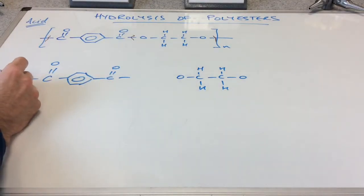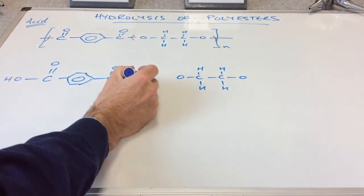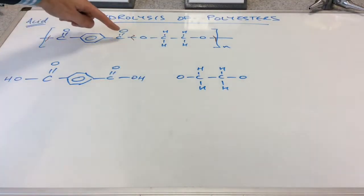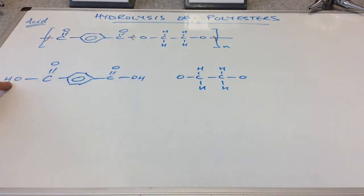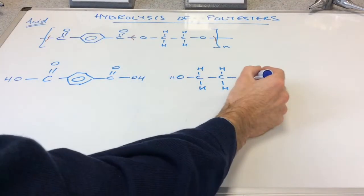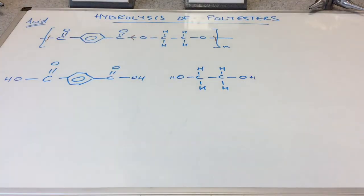What's going to go here and here? Well from the water, we're going to get OH groups. So we're turning the C double bond O part in the repeat unit back into a dicarboxylic acid. And then we're going to put H's on there, and we're going to turn that back into the diol.